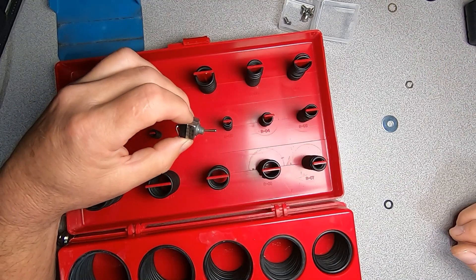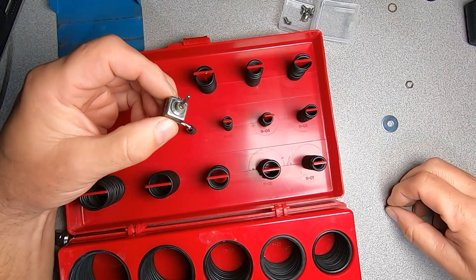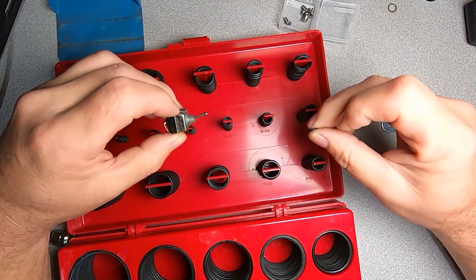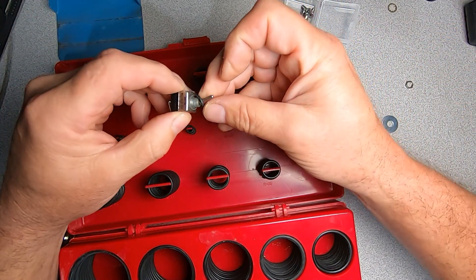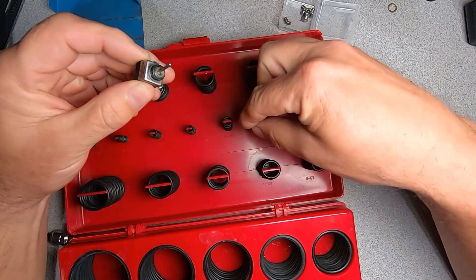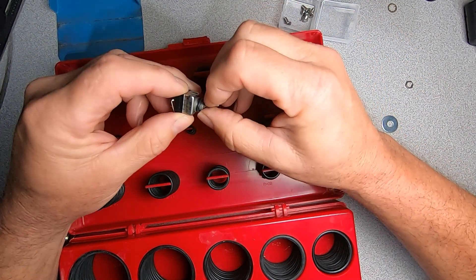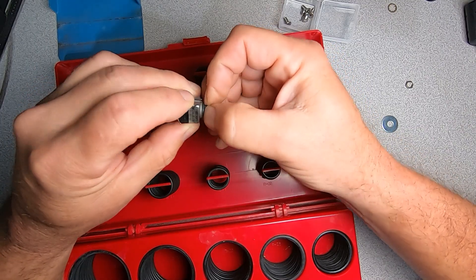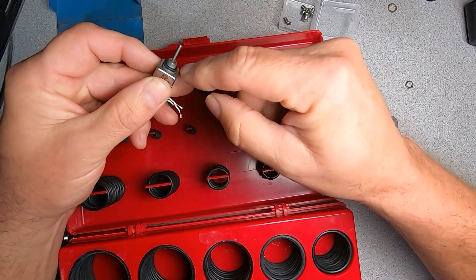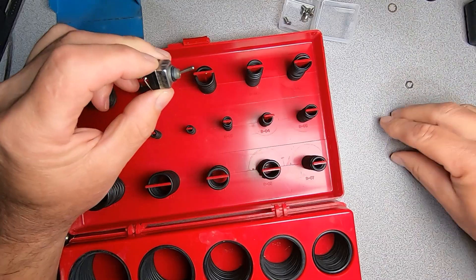So the way I've elected to place a bushing on this switch is just using a simple O-ring out of my assortment here. This O-ring, O-ring 3 or R3, is a quarter inch inside diameter and three eighths outside diameter, which fits in our hole perfectly well.